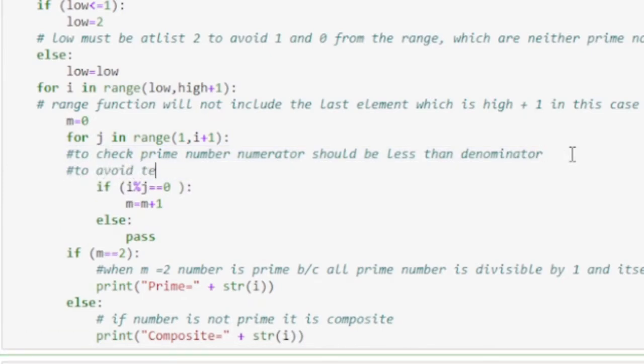For J in range 1 comma I plus 1. If I modulus J equals equals 0, m equals m plus 1. Else, pass.